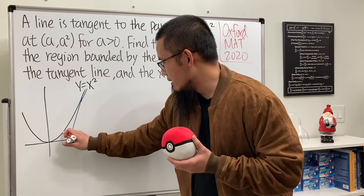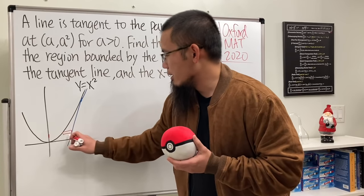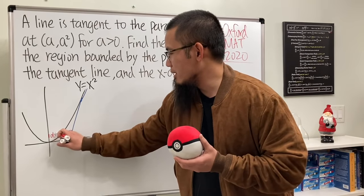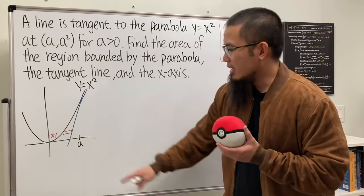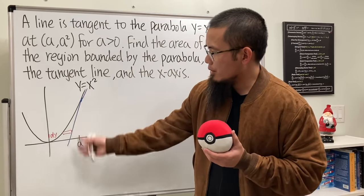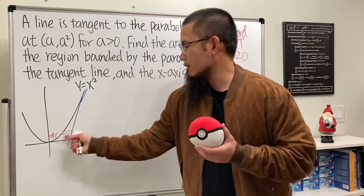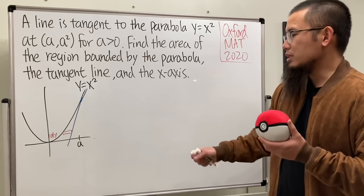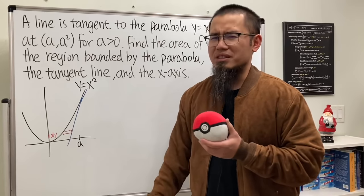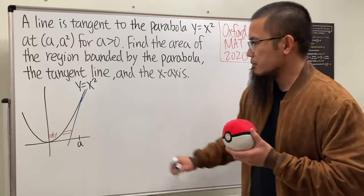I'm going to place a rectangle like this. The height is just dy — the small change in the y values — and the width is the x value of the tangent line (the blue function) minus the x value of the parabola. So we just have to figure out what the x value of the tangent line equation is, and that's the part that requires calculus.